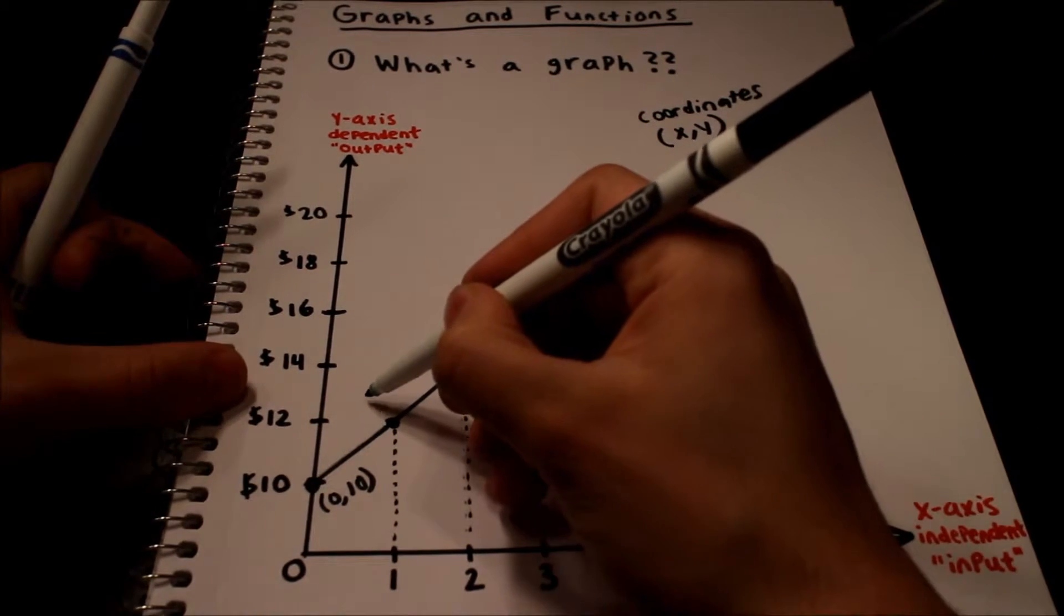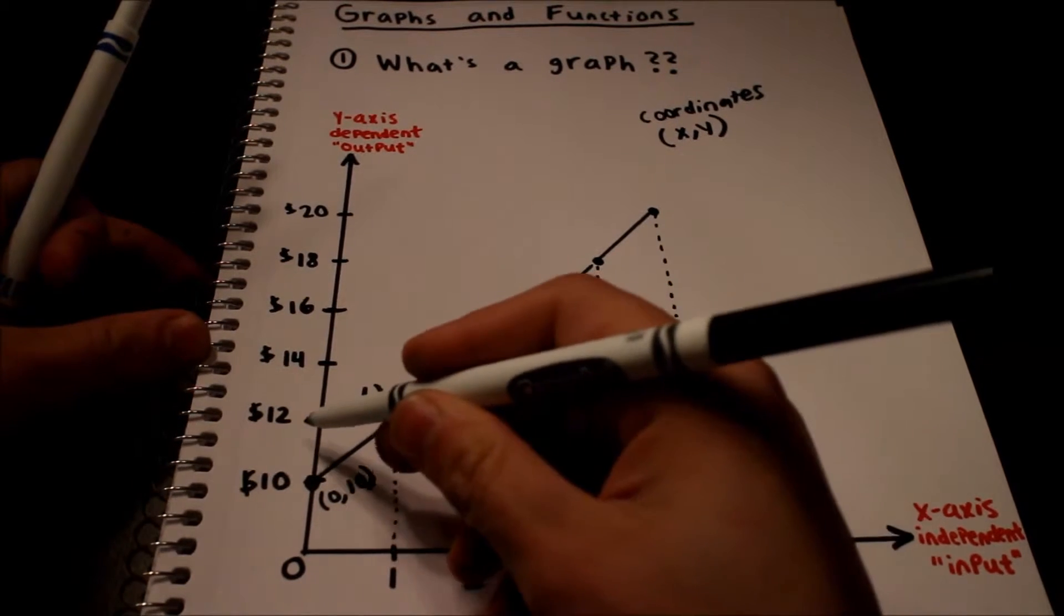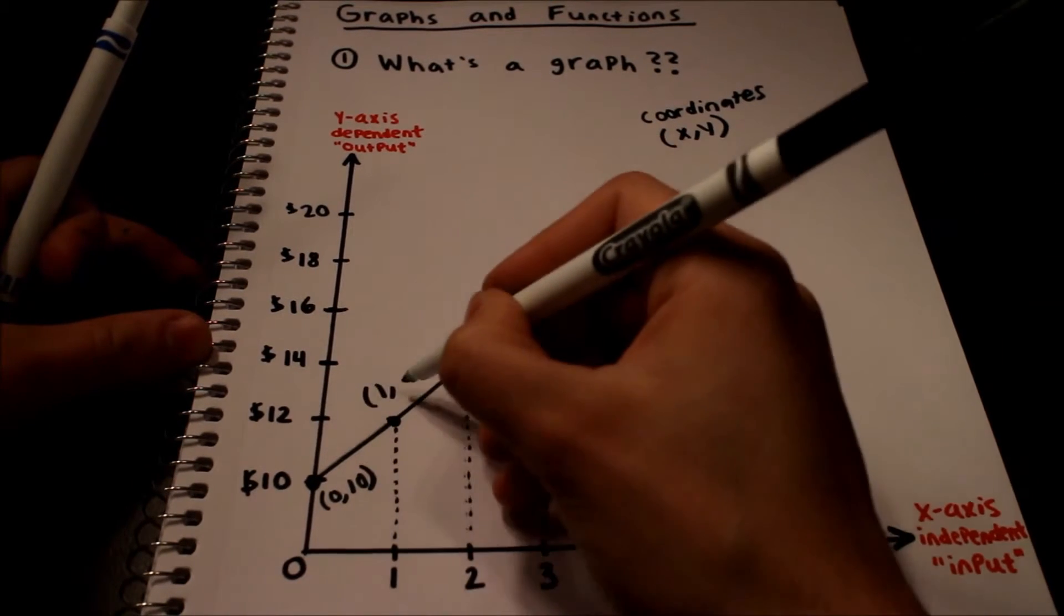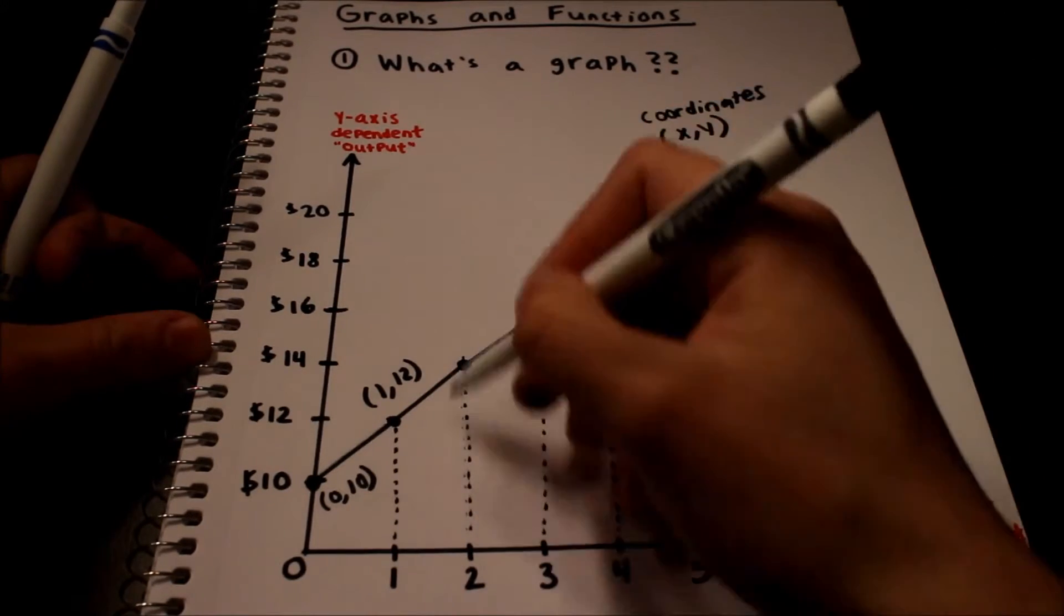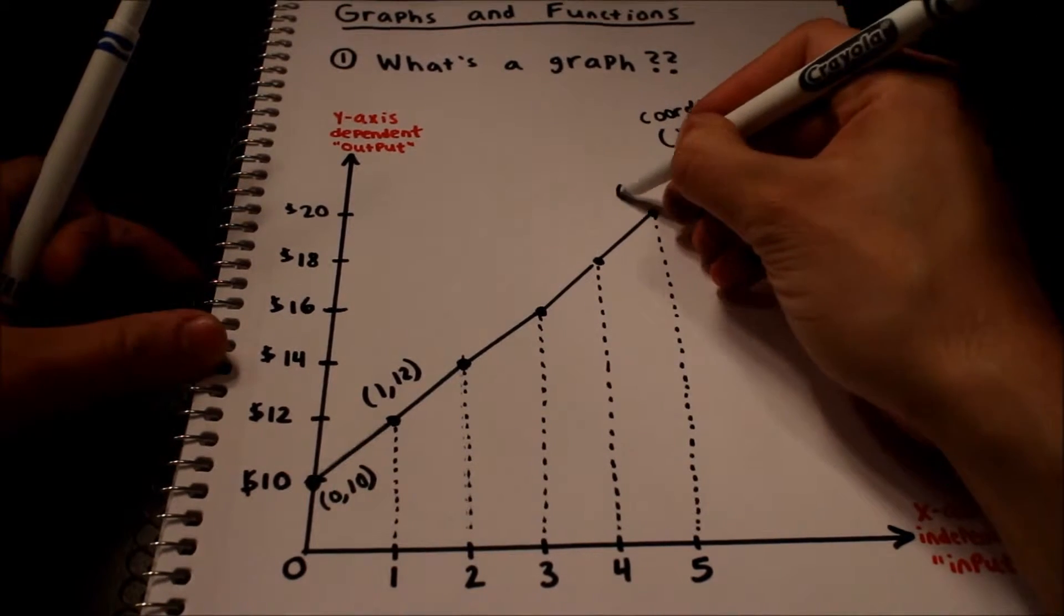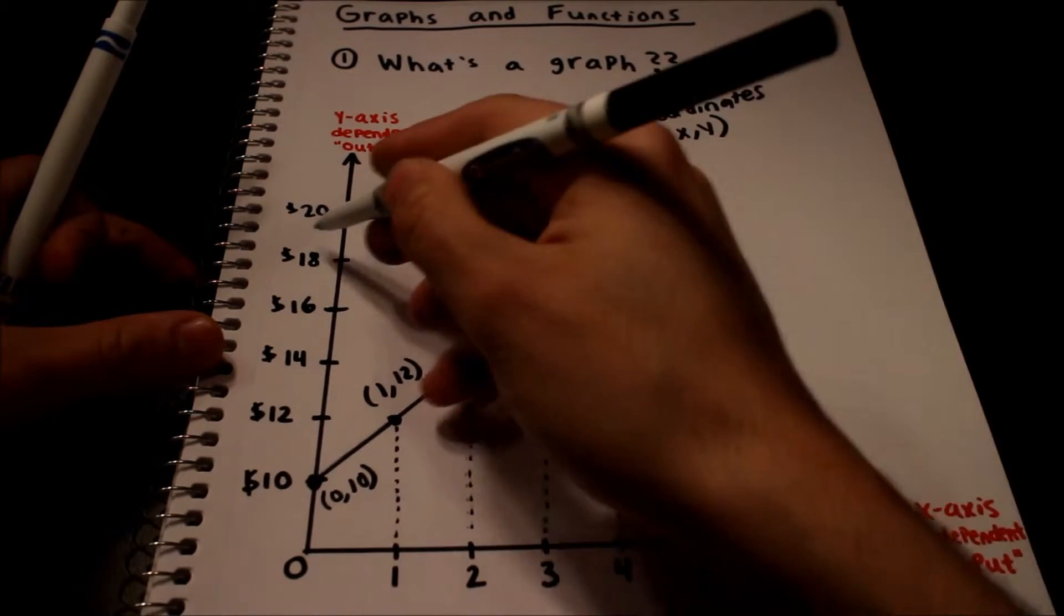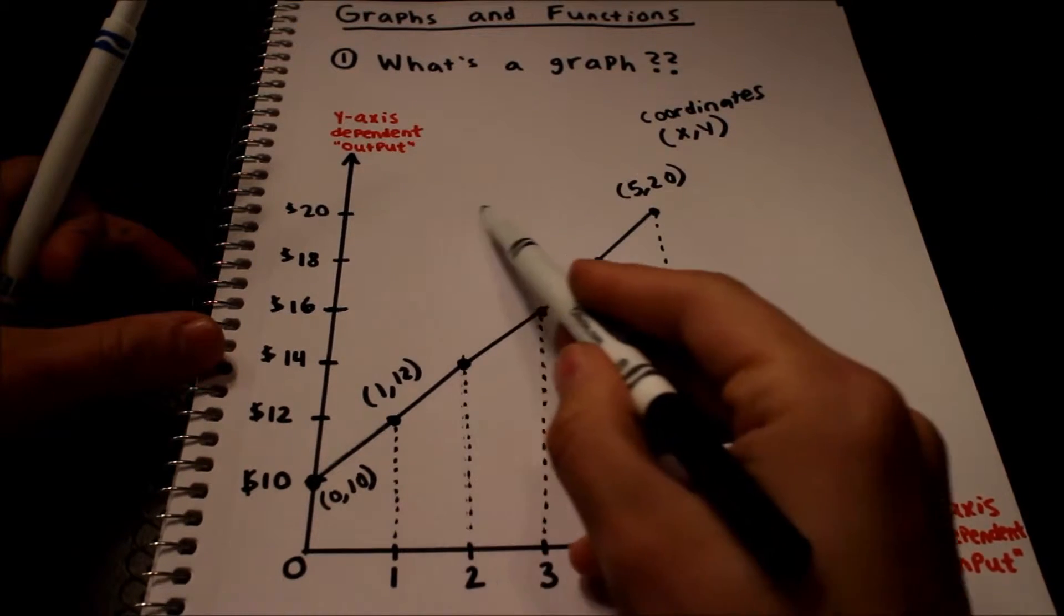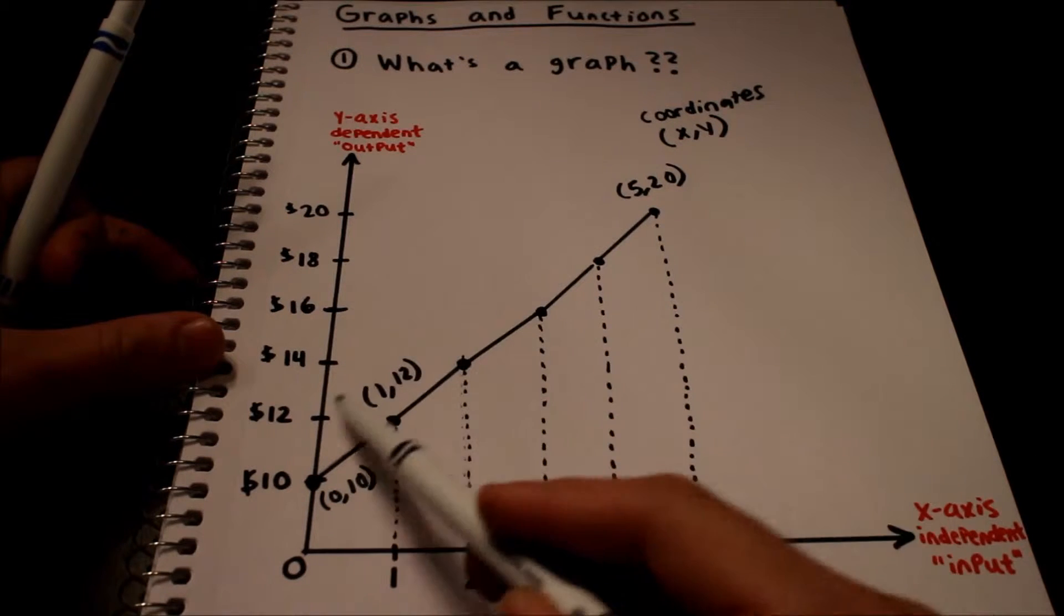This point right here is X equals 1 because that's the X value of 1. Y is 12, or you can say input is 1, output is 12, and it goes on and on. So you can do that for each point. This X is 5, Y is 20. I probably should have drawn the dotted line, but that goes to that point.